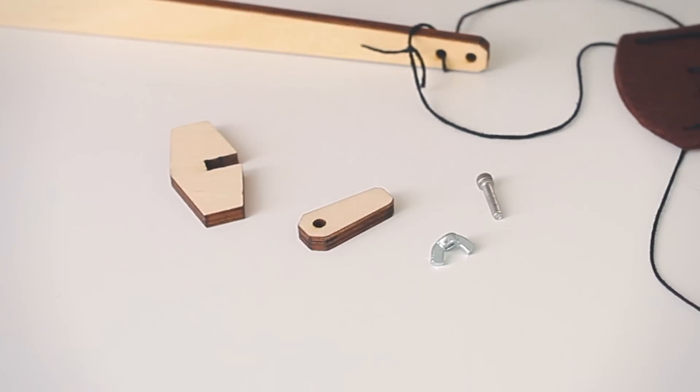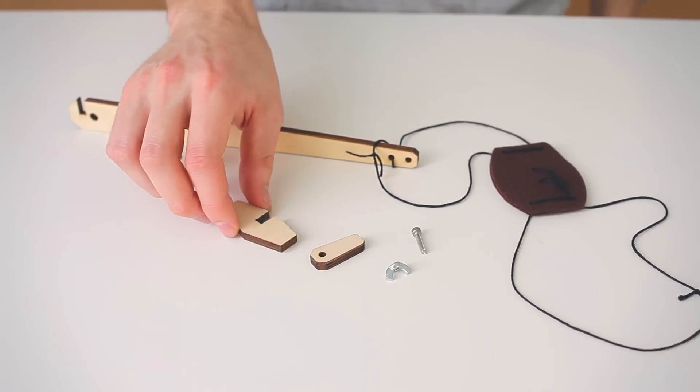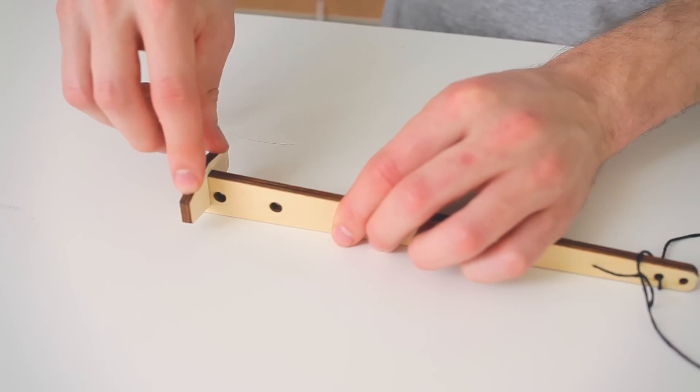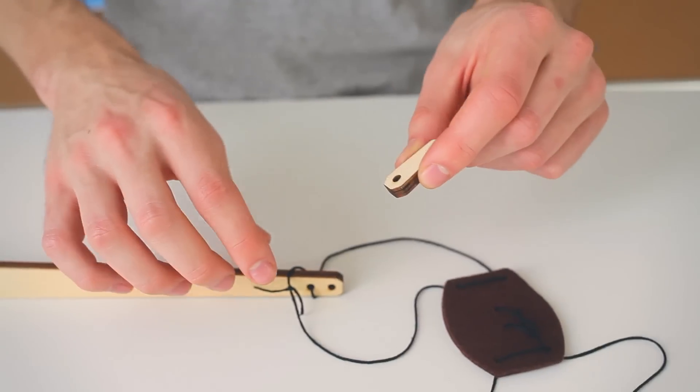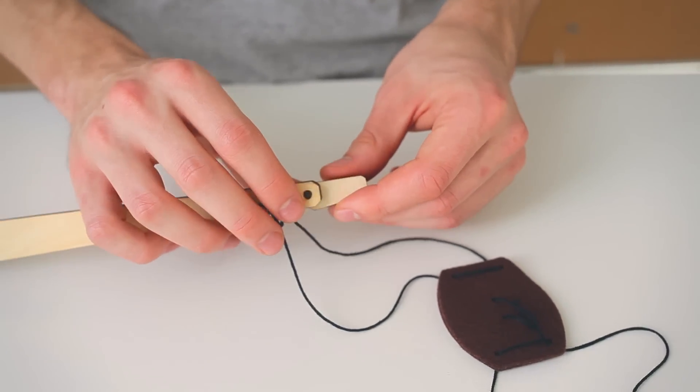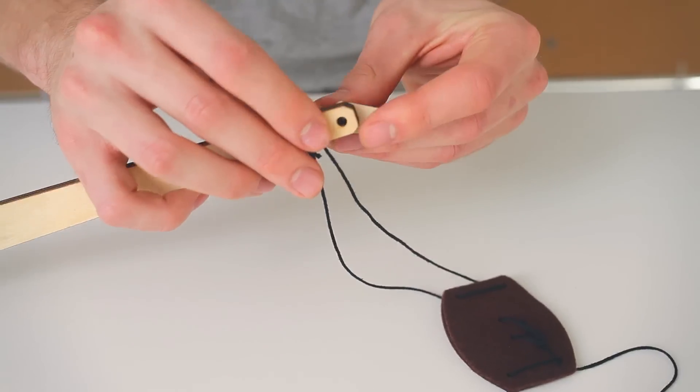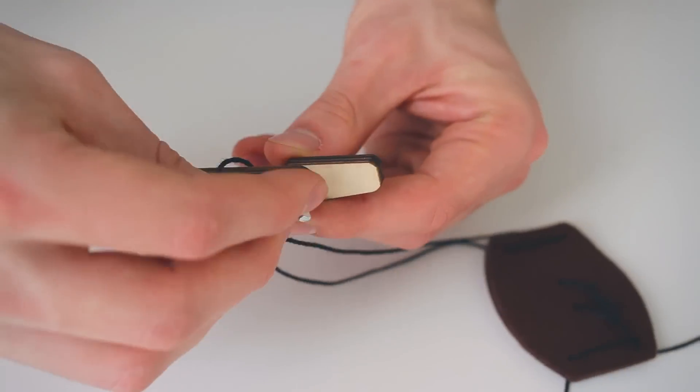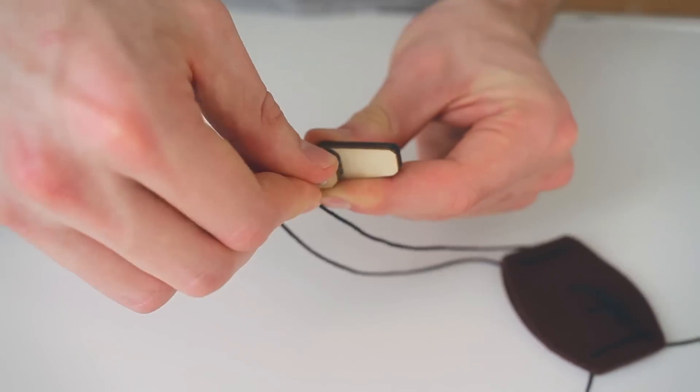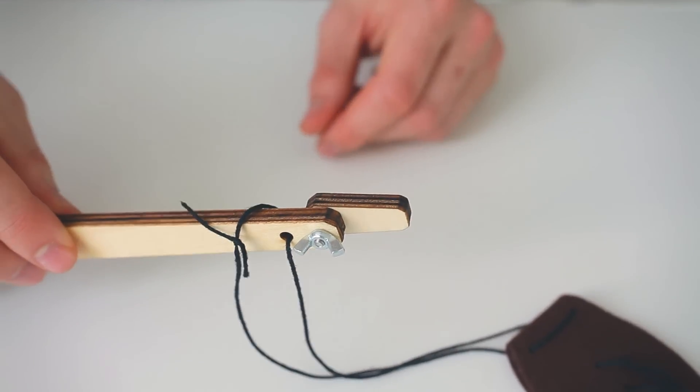Next we're going to add these four components. First take your hexagonal piece and slot it right into the long piece. Then take this little firing latch, line it up with the last hole, take your screw and slide it through the two holes. Then take your wing nut and screw it on the other side. What we're doing here is creating a release latch for our trebuchet.